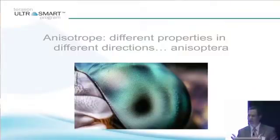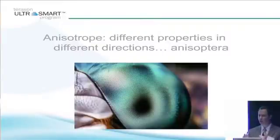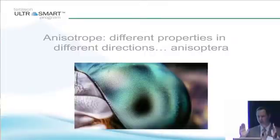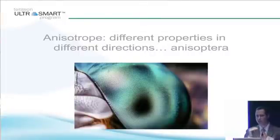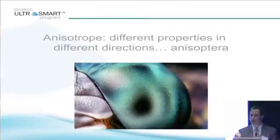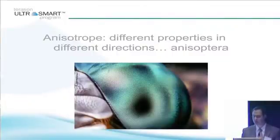An anisoptera is a dragonfly, and a dragonfly has an eye which reflects and refracts light onto a central cone, which picks up light and is able to allow the dragonfly to see. In much the same way, there's a property of scanning tissue which is called anisotropy.